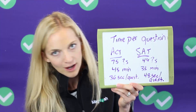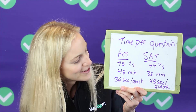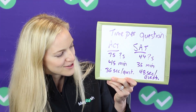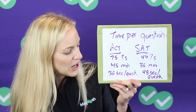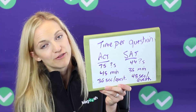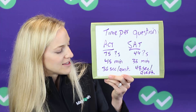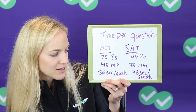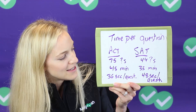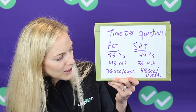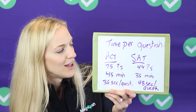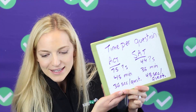Finally, time per question: on the ACT you have 75 questions to do in 45 minutes. On the SAT you have 44 questions to do in 35 minutes. As is pretty typical with the ACT, you need to be working at a quicker pace — you'll have about 36 seconds for each question, which doesn't sound like a lot. The SAT is a little more generous: you have 48 seconds per question, and you also have fewer questions to do overall.